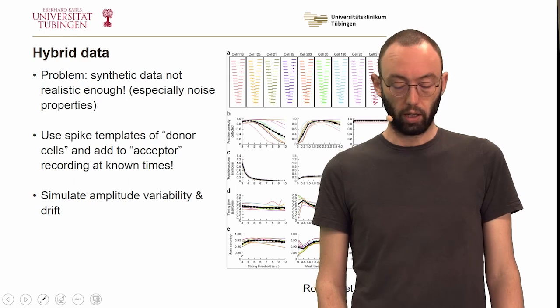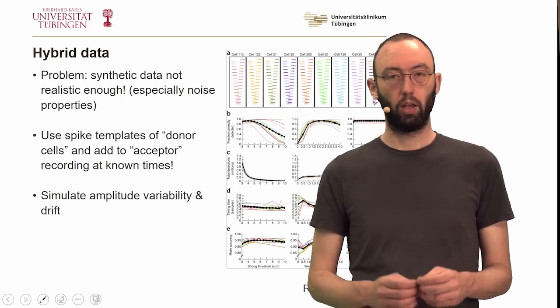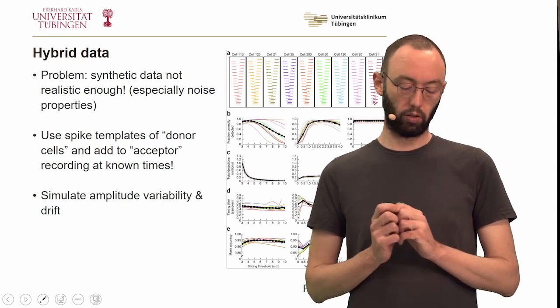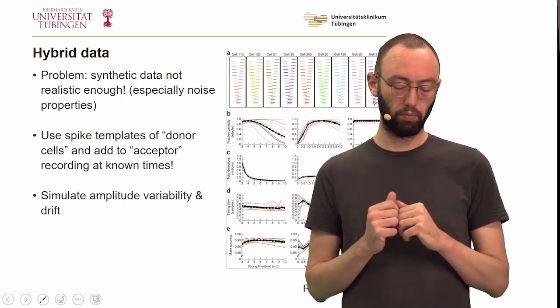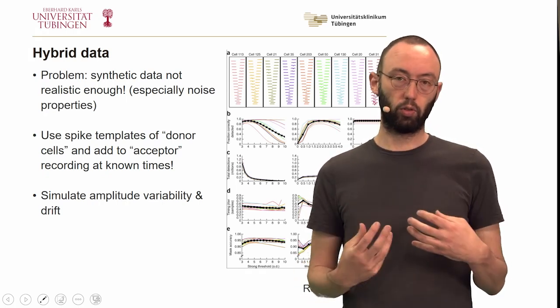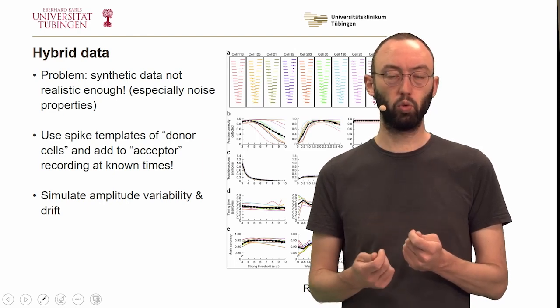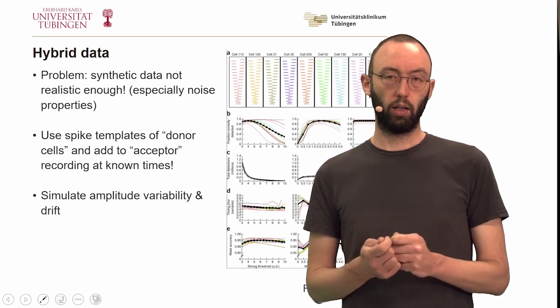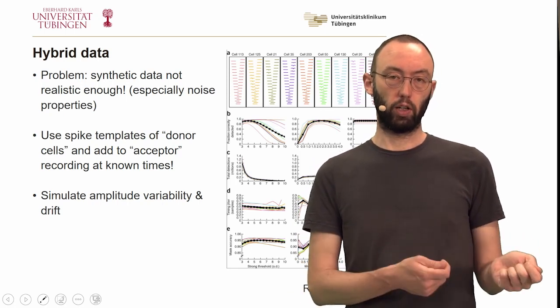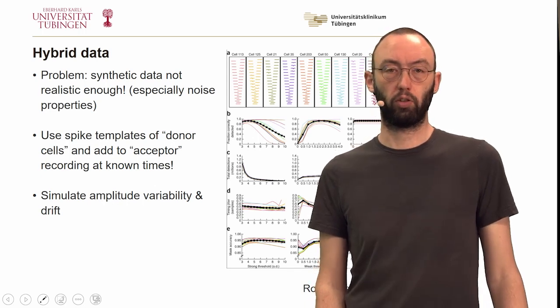Finally, there's this approach of creating hybrid data. Synthetic data doesn't appear to be realistic enough, especially the noise properties, so why not just use donor cells, donor neurons, where we have a known spike waveform that we can also quantify, and inject copies of that spike waveform, or copies of the spike template, to an acceptor neuron at known times. And then we ask, can we extract those back? We can simulate a little bit amplitude variability and drift. We can control these factors. We have full control over what we do to the donor spikes. But the noise structure of all the background, of all the other neurons in there and so on, this is exactly as it would be in a real recording. This is actually a quite good approach if you want to benchmark spike sorting algorithms at scale.